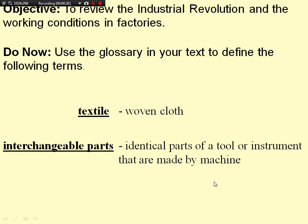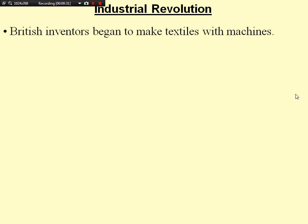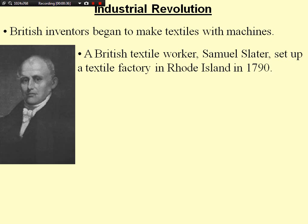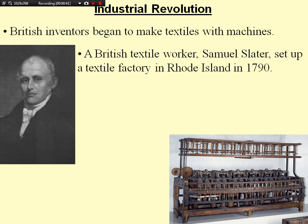British inventors began to make textiles with machines. A British textile worker, Samuel Slater, set up a textile factory in Rhode Island in 1790. This was the beginning of the industrial revolution in the United States.